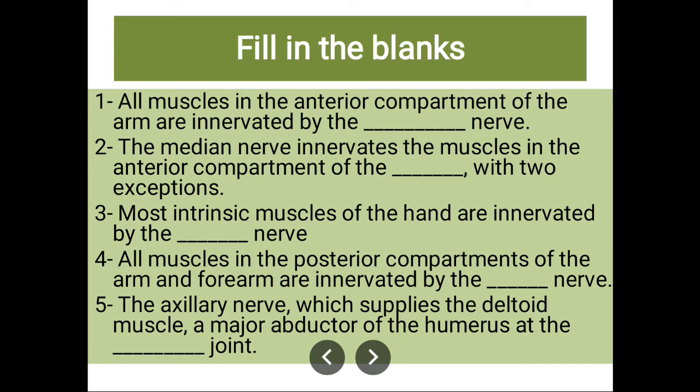With two exceptions. Question three: most intrinsic muscles of the hand are innervated by the ulnar nerve. Question four: all muscles in the posterior compartment of the arm and forearm are innervated by the radial nerve.